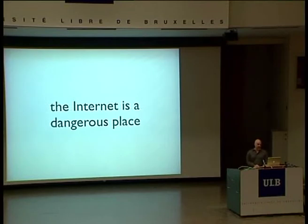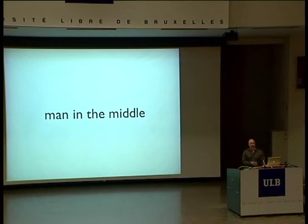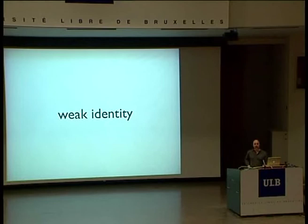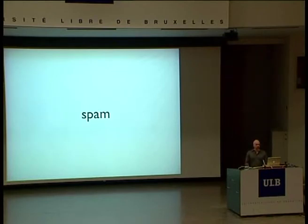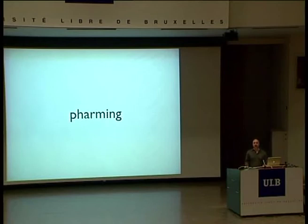Contrast this with the internet. The internet is a dangerous place — don't use the internet. There are lots of potential attacks: man in the middle, unauthenticated users, address spoofing, weak identity, rogue servers, denial of service, directory harvesting, buffer overflows in various code bases, spam, worms, trojans, malware, phishing and pharming. We have to come up with new terms for this stuff all the time because the internet is such a nasty place.